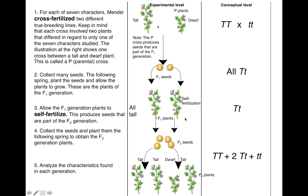Mendel was smart. He realized that the short trait just didn't go away — it was masked somehow. It was recessive, but the information for that trait was still present in the F1 generation. So he self-fertilized the F1 generation to produce some seeds, and when he planted those seeds, he ended up with mostly tall plants but also some dwarf plants. He was able to determine that the genetic information for that dwarf plant was still present in those F1 plants.